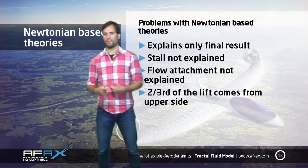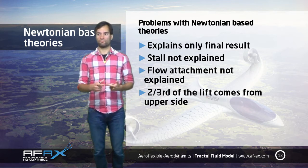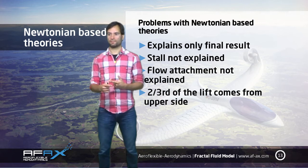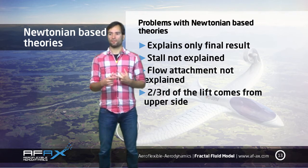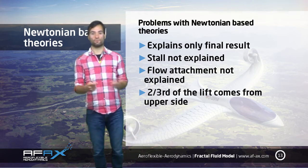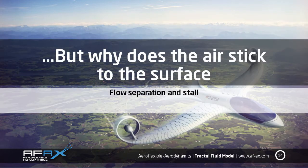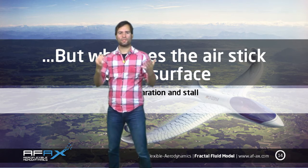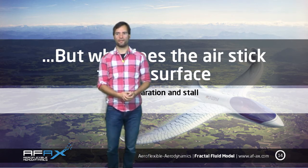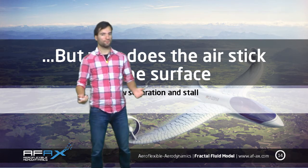Why? It explains only the final result, and stall is not explained. Flow attachment on the upper side is also not included. So we need an answer for where the two-thirds of the lift provided by the upper side is coming from. But what then holds planes in the air and how does the air follow a wing contour? Let's have some further inspections.